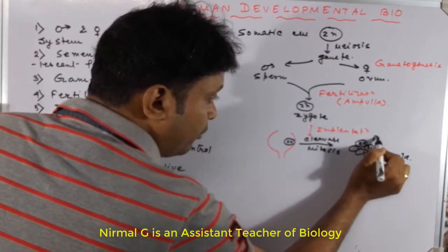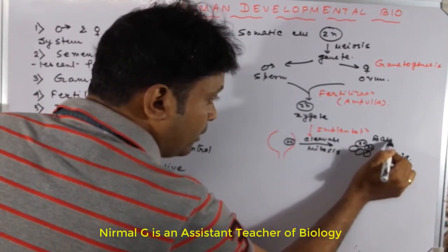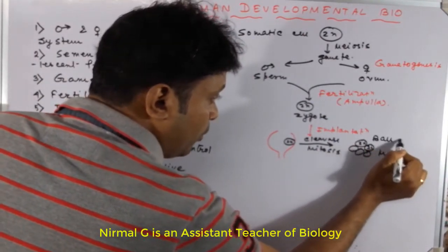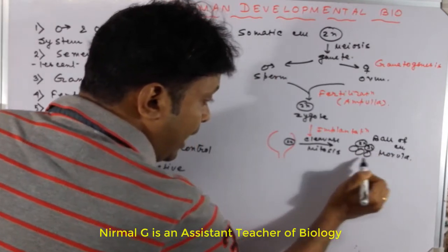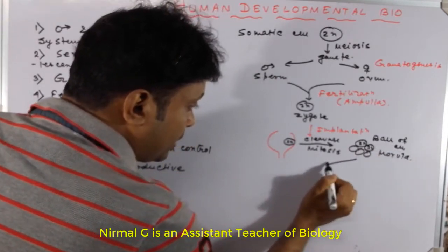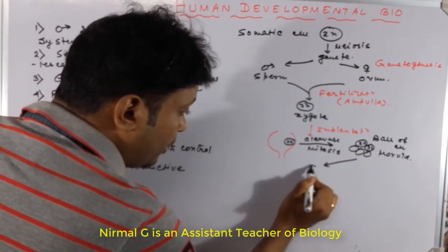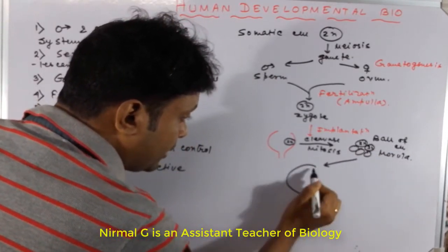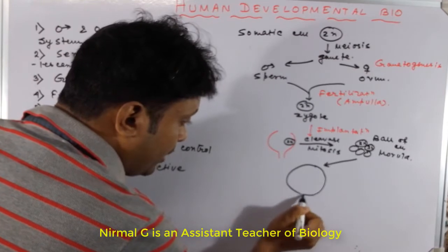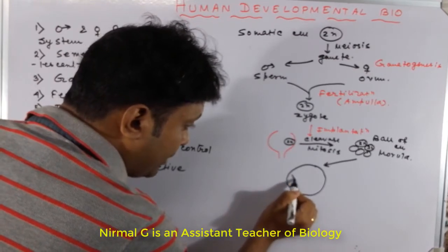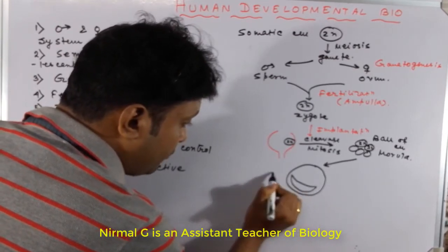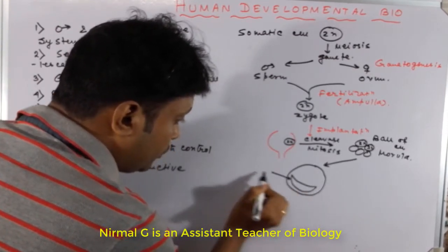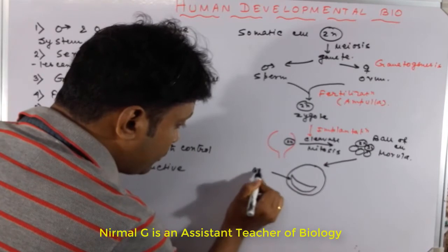By the process of cleavage a ball of cells is formed, called the morula. Just after the formation of the morula, a fluid-filled cavity is formed — this is called the blastocyst.